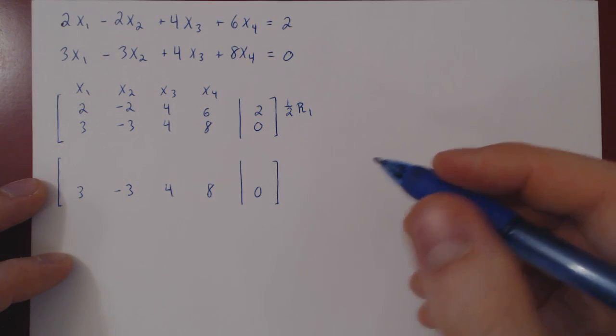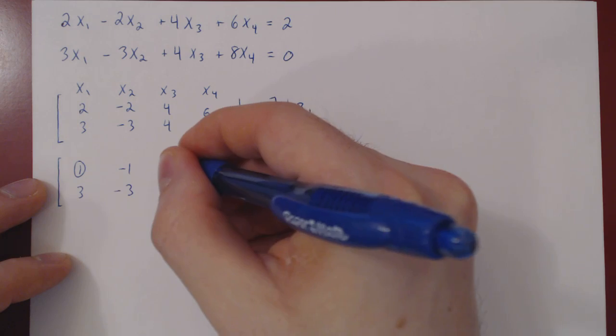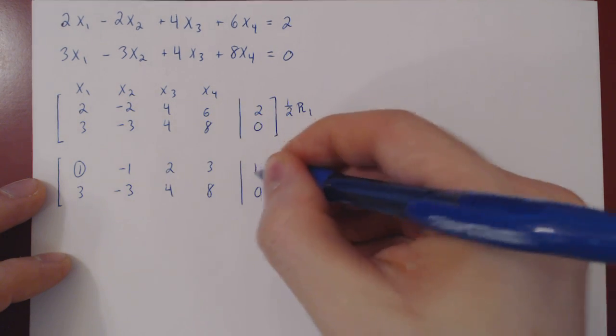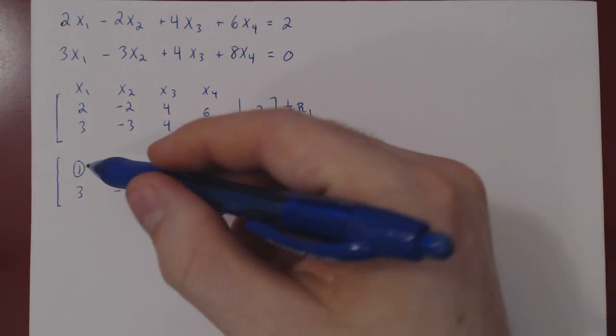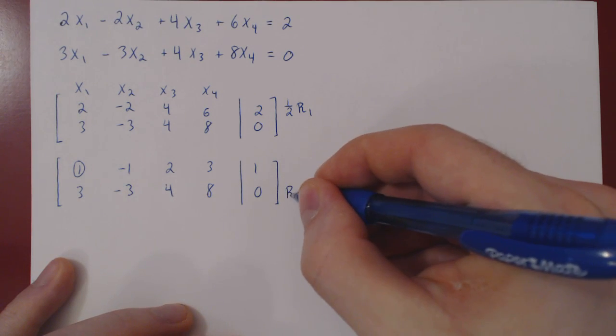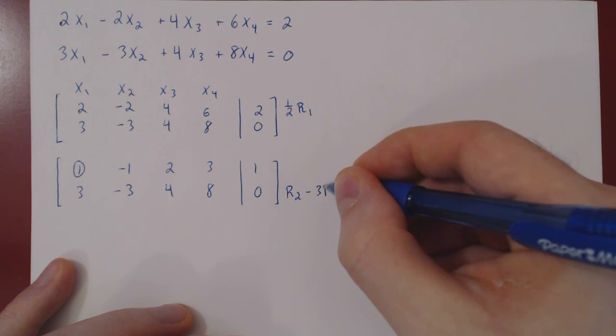If you multiply row 1 by 1 half, you get 1, negative 1, 2, 3, 1. Now we have our leading one in the top row. We'll kill the entry below it by doing row 2 minus 3 row 1.